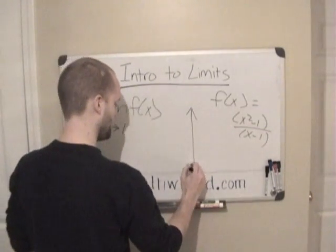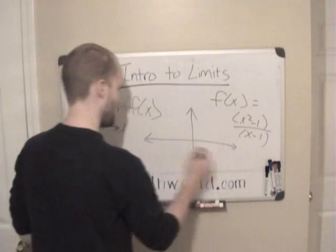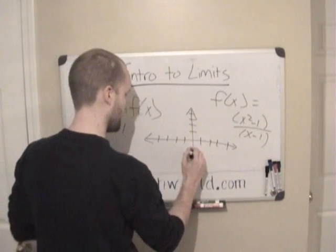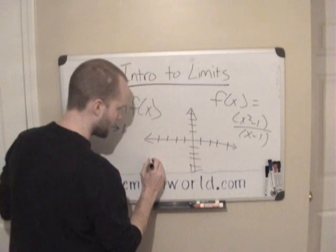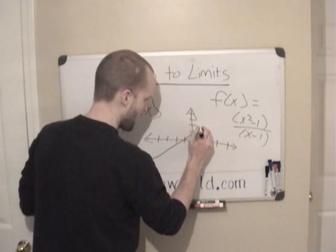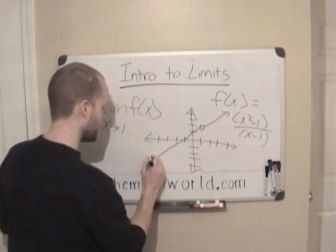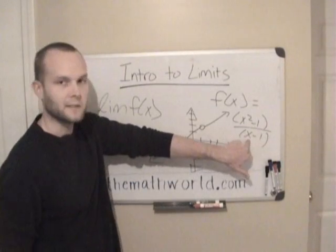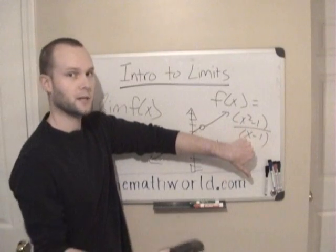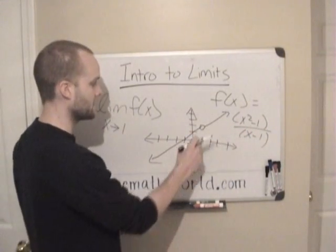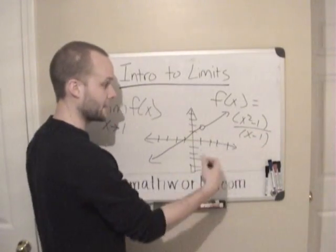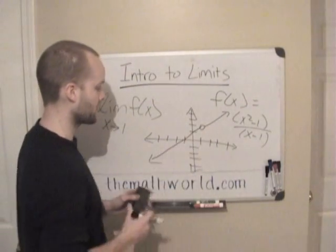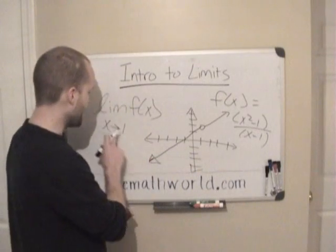So if we graph this out — bear with me, it's not going to be exactly to scale but you'll get the point. If we graph this out it's going to look something like this. You can tell that at x equals 1 it's undefined. If we plug in 1 we get 0 on the bottom, and you can't have 0 on the bottom of a fraction — it's undefined. So if we try to find a point on this line at x equals 1, it's not going to be there, so we draw an open circle there. This is not a continuous line.